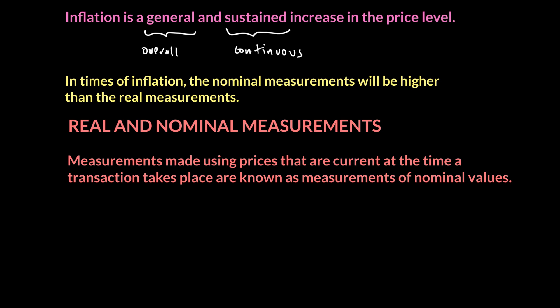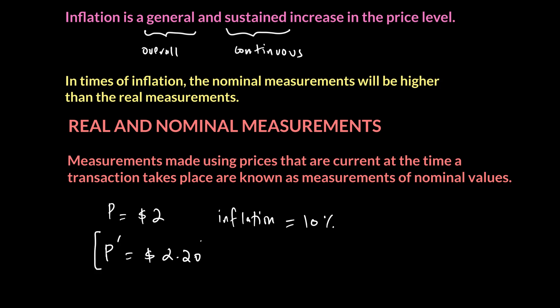Let's say last year you bought a good for $2. There is inflation of 10% this year, which means the price for the same good will now be $2.20 — 10% more. That $2.20 means your real consumption has not changed for this item. You are still buying the same good, but your spending has gone up. At current prices, the good is becoming more expensive, while in reality you are still buying the same good.